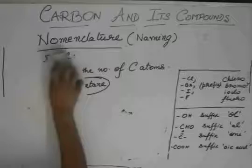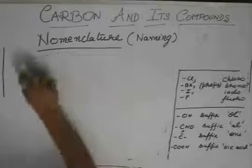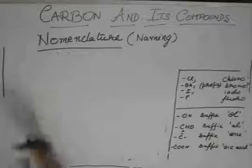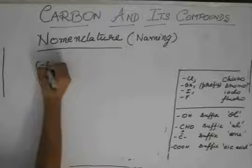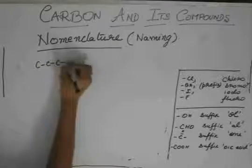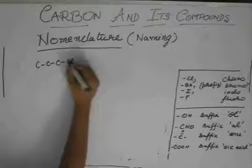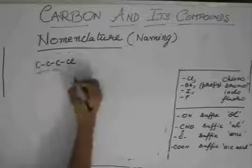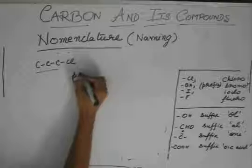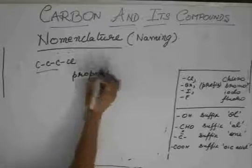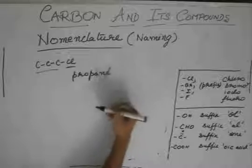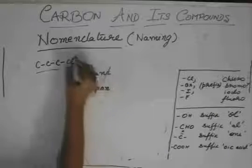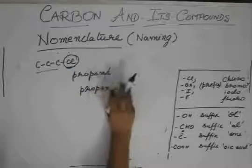Let us do some more examples. Suppose we have this. I am not drawing the hydrogens. Count the number of carbon atoms. Three. The name for three is propane. But it has this functional group attached. Delete this E, make it propan and then add the prefix or suffix of this functional group.